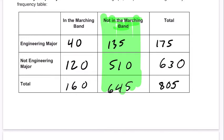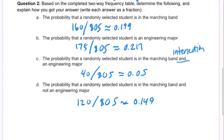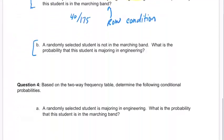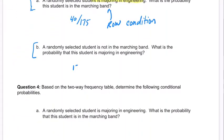We're in this column right here. And what is the probability that they are an engineering major? Well, there are 135 out of 645 — that would be our answer here. That's 135 out of 645, and this would be a column condition.